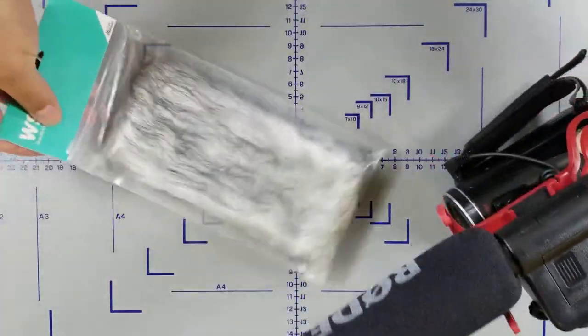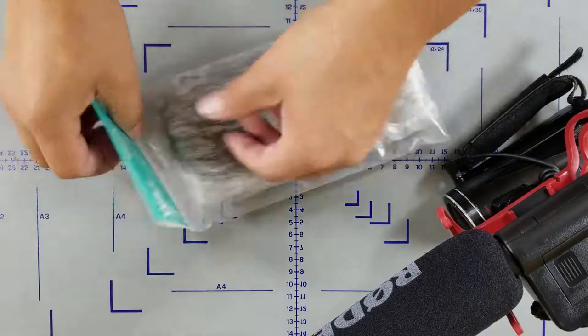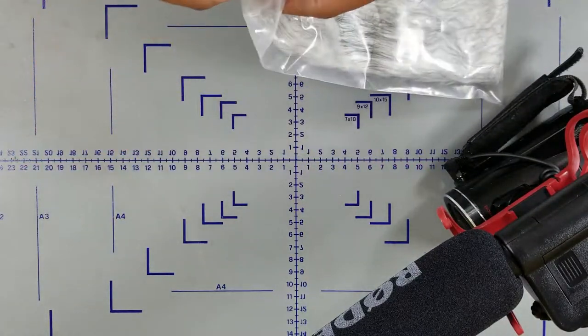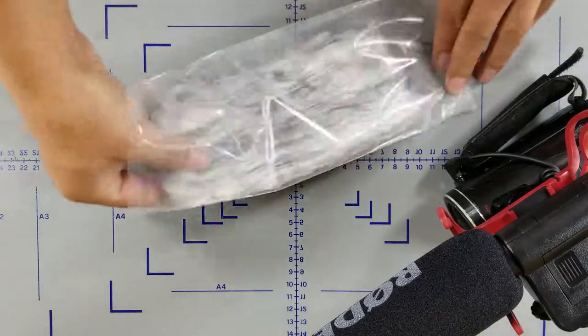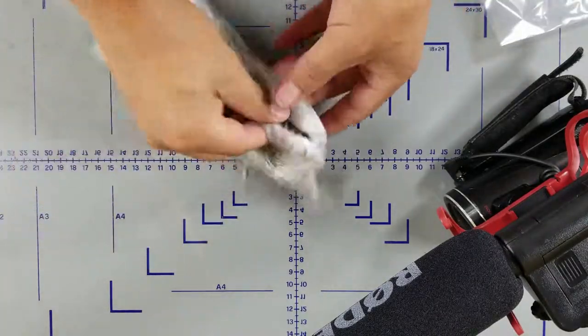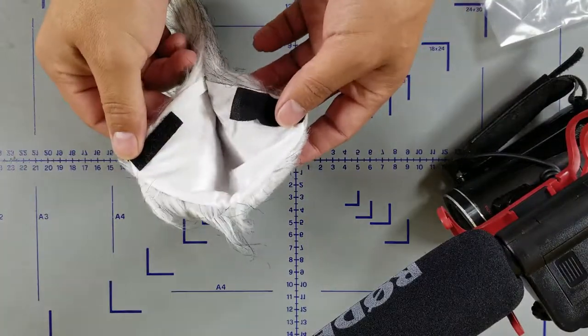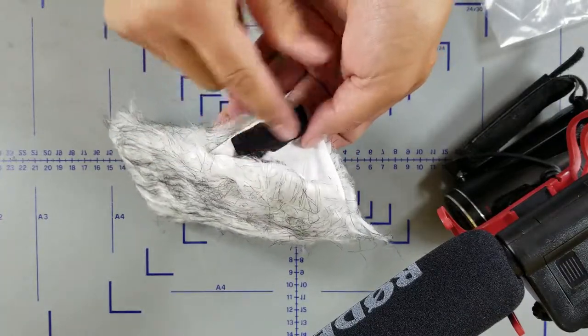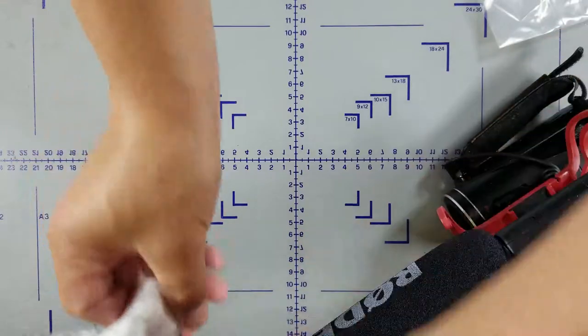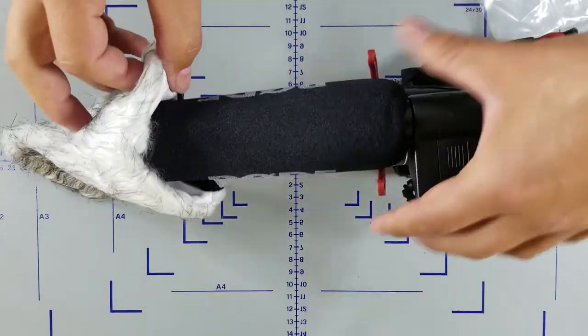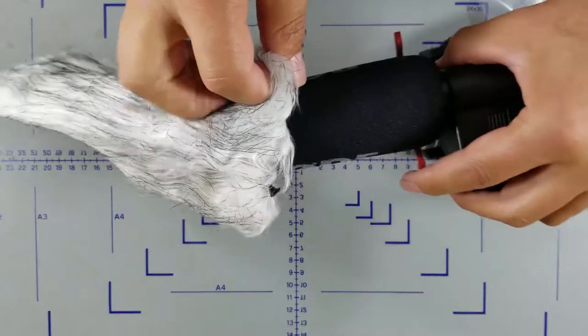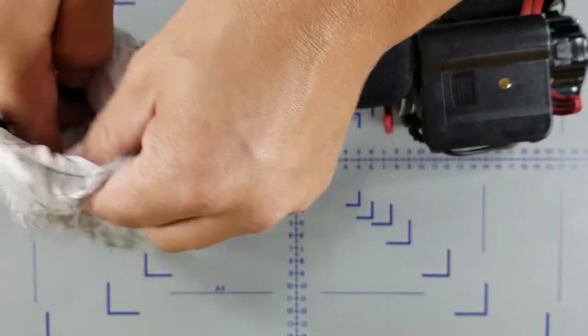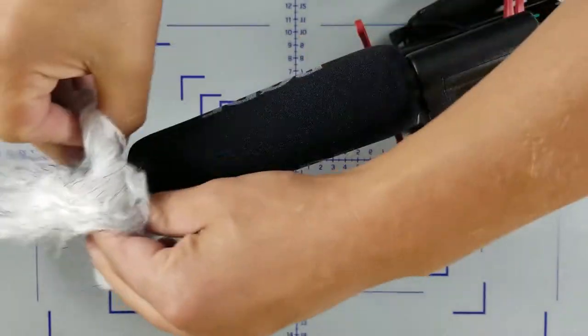The other thing we have is the windscreen. Those go on pretty simply. Just slides right over. So, not too much. There's a little piece of Velcro. And they have something to protect that.